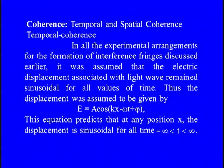Up till now we have discussed some important engineering applications of interference. Now I am going to discuss about the coherence of light waves. First I will discuss about temporal coherence and then I will discuss about spatial coherence. In all the experimental arrangements for the formation of interference fringes discussed earlier, it was assumed that the displacement — that is, the electric field associated with the light wave — remained sinusoidal for all values of time.